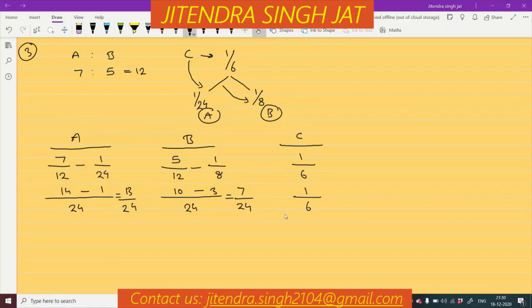And here it is given directly 1/6. So their ratio is 13/24, 7/24, and 1/6. Denominators are not same, so once again we will take LCM. So here we get 13, 7, and 6×4=24, 4×1=4. So the new profit sharing ratio among partners is 13:7:4.